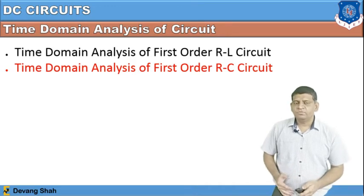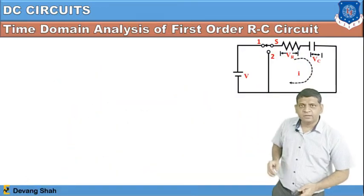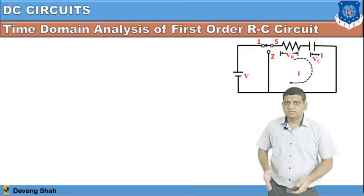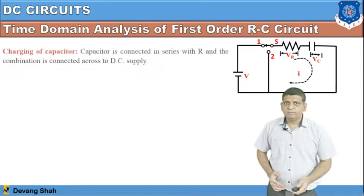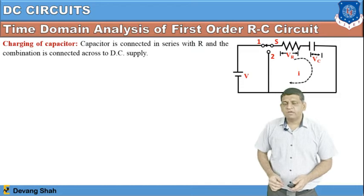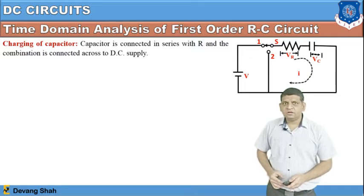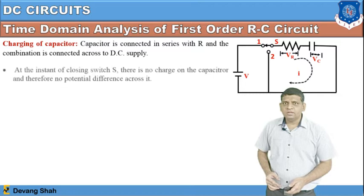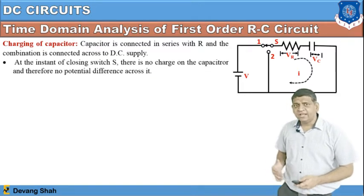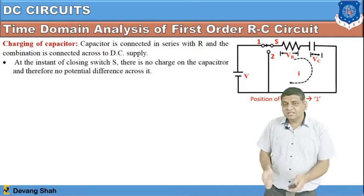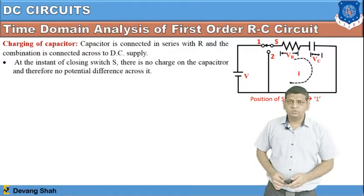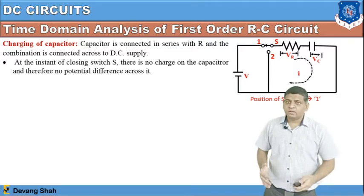Today's topic is time domain analysis of a first order RC circuit. From the circuit diagram, you can see two components connected in series: resistance and capacitor, with a DC voltage source V applied to the combination of R and C. There is a switch with two positions — position number one and position number two. The capacitor is connected in series with the resistance, and at the instant of closing the switch, the series combination is connected with the DC voltage source.